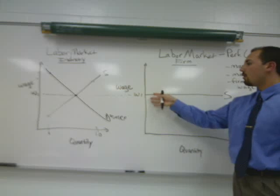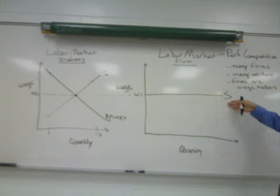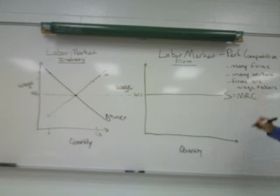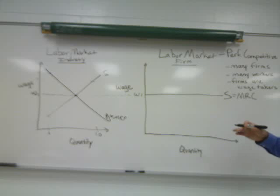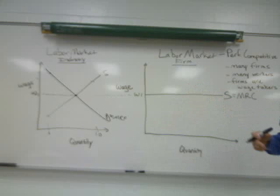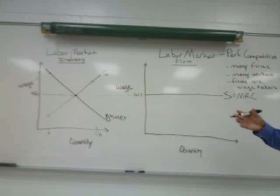So all workers will be paid exactly this wage. Not only is that the supply curve, but it is also referred to as the marginal resource cost, or MRC. This is the additional cost the firm incurs by hiring an additional unit of labor — which is the wage rate. So if W1 is ten dollars per hour, then the marginal resource cost is ten dollars for every single worker hired on an hourly basis.